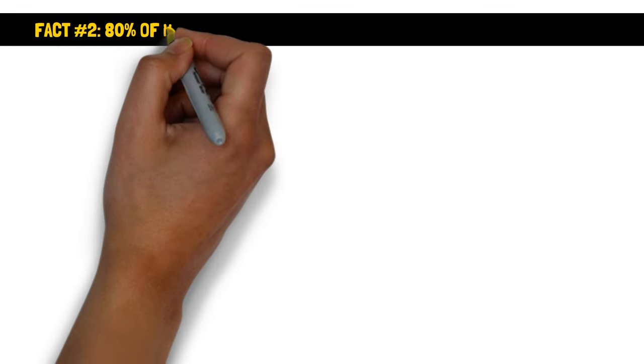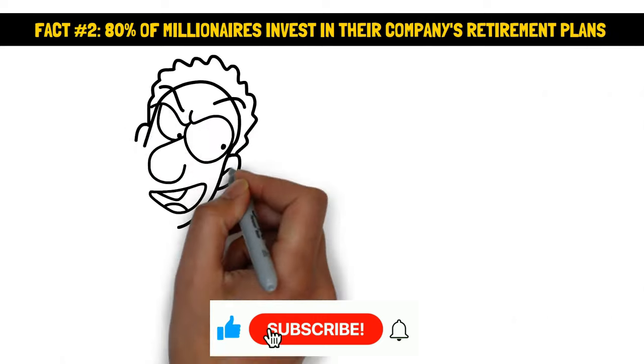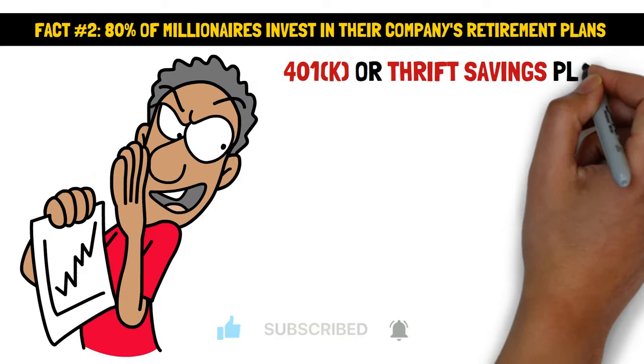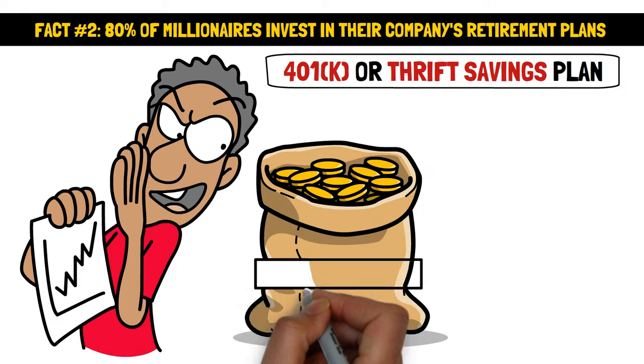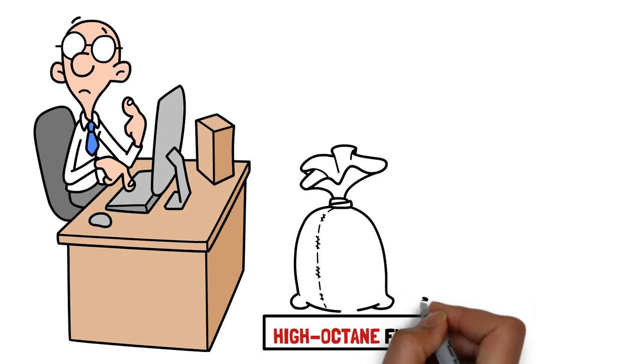Fact number two, 80% of millionaires invest in their company's retirement plans. Ever heard of the term 401k or thrift savings plan? If you're snoozing at the mention of these retirement funds, it's time to wake up. These aren't your grandpa's dusty old savings accounts. They're high-octane fuel for your financial rocket ship.